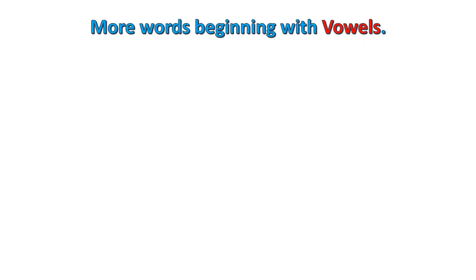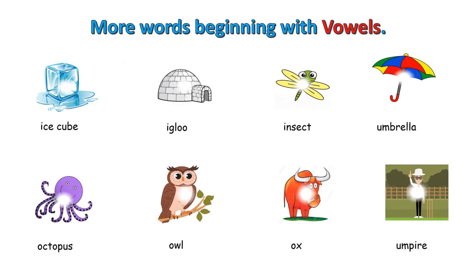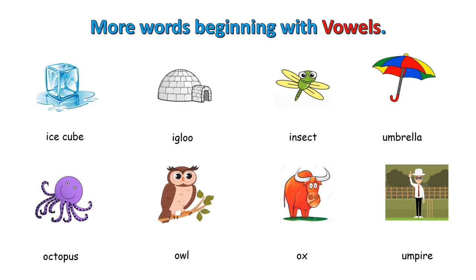Let's read more words beginning with vowels: Ice Cube, Octopus, Owl, Ox, Umpire.